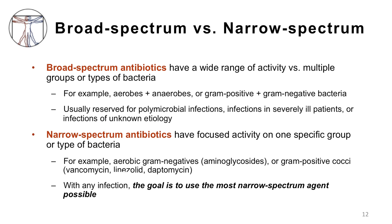In contrast, narrow spectrum antibiotics have a focused activity on one specific group, species, or type of bacteria. For example, aerobic gram-negatives might be covered by a class of drugs called the aminoglycosides, which we'll cover in a separate video. Or a particular drug might be specific for gram-positive cocci — for example, vancomycin, linezolid, and daptomycin. With any infection, the goal is to use the most narrow spectrum agent possible.